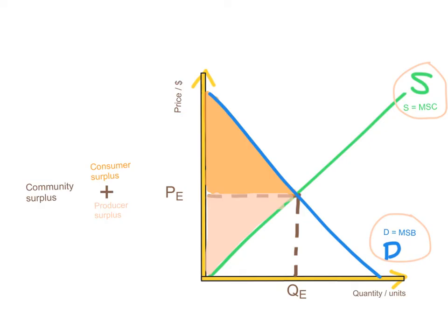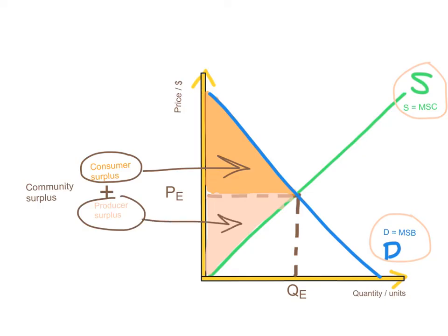We've seen in previous videos that consumer surplus is that triangle under the demand curve here, and producer surplus is that triangle above the supply curve here. Both of them together give us the community surplus. So community surplus is consumer surplus plus producer surplus, which is both triangles added together here that I am highlighting with the laser pointer. It's that big triangle. We know that community surplus is maximized where marginal social cost equals marginal social benefit, and this is the optimum allocation of resources in the free market.